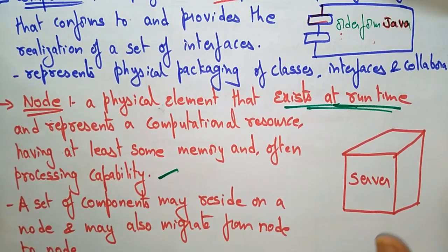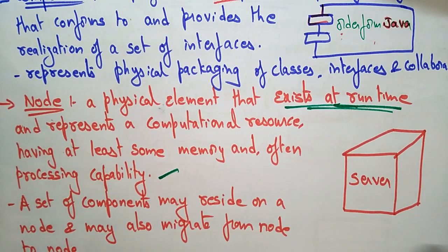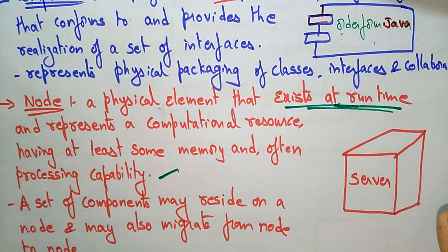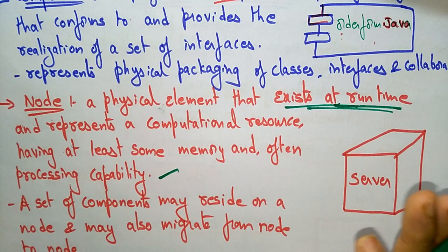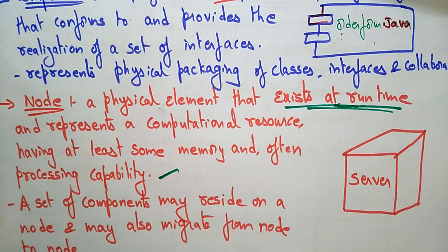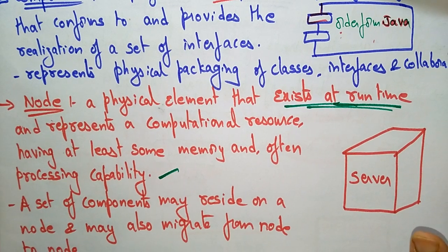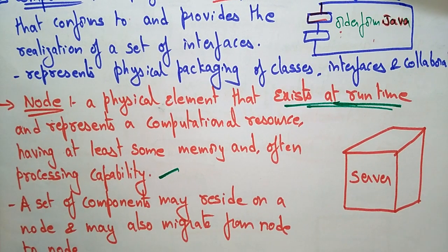So these are the different structural things that are present. In the next video, we will discuss the remaining things: behavioral things, grouping things, and annotational things. Thank you.